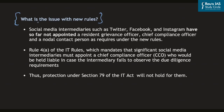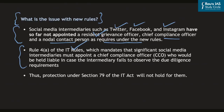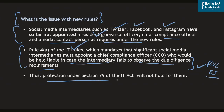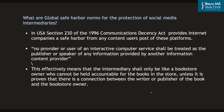What are the issues with the new rules, and why are some social media intermediaries not complying? Social media intermediaries such as Twitter, Facebook and Instagram have so far not appointed a resident grievance officer, chief compliance officer or nodal contact person as required by the new laws. Rule 4A of the IT rules mandates that significant social media intermediaries must appoint such officers, who would be held liable if the intermediary fails to observe due diligence requirements. Therefore, the protection under Section 79 will not hold for them according to the government. Safe harbor rules also exist globally.